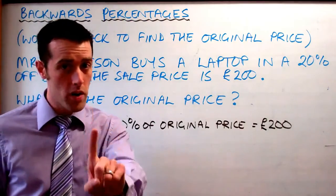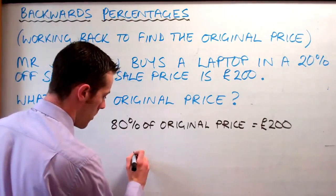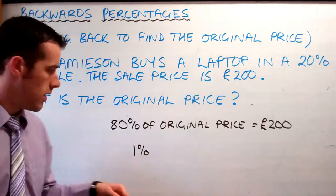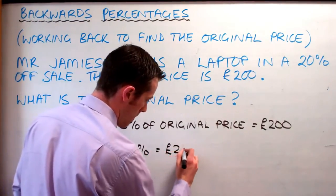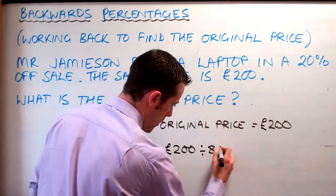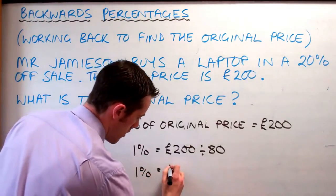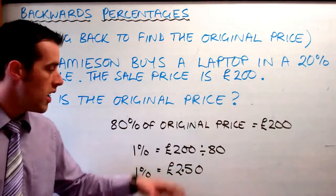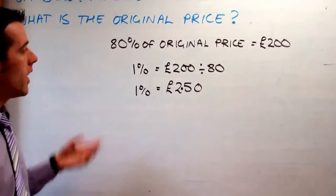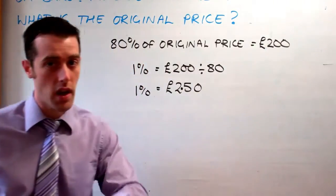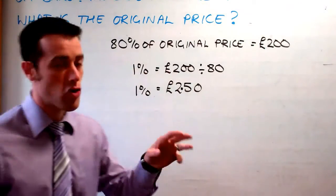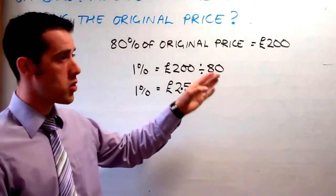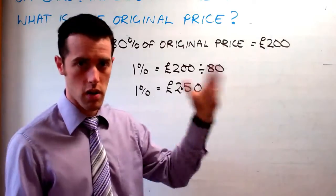The best way to do it is to figure out what 1% is first. So we've got 80% already, and we figure out 1% by just dividing by 80. We take our £200 and divide by 80, so 1% is equal to £2.50. The sale price is 80% of the original price because we took 20% off, and our strategy is always to work out 1% first — whatever percentage you start with, you just divide by that number.